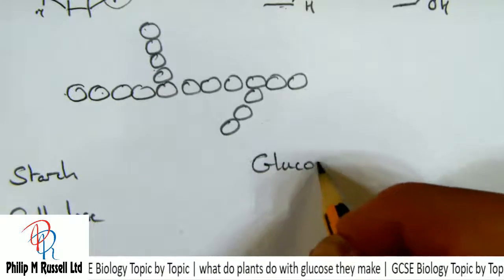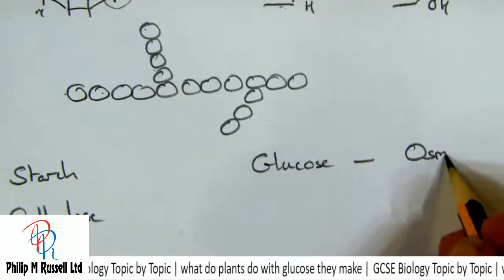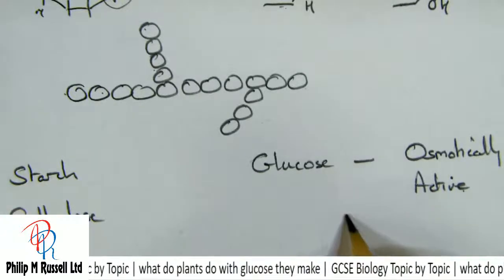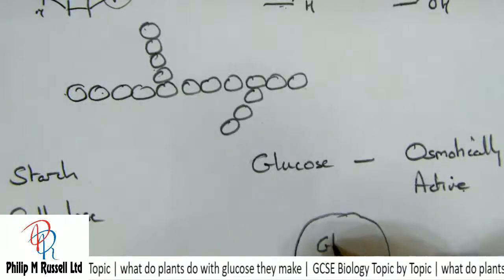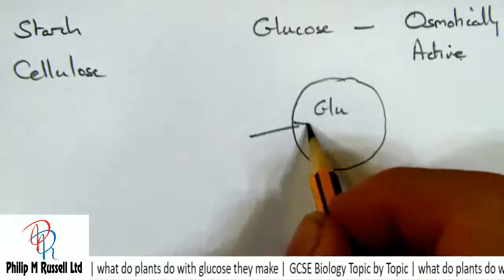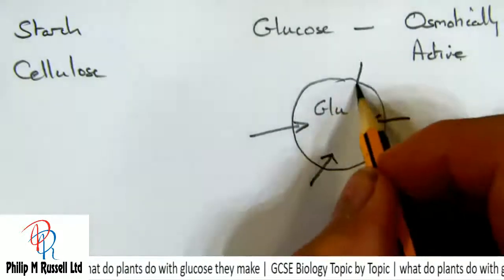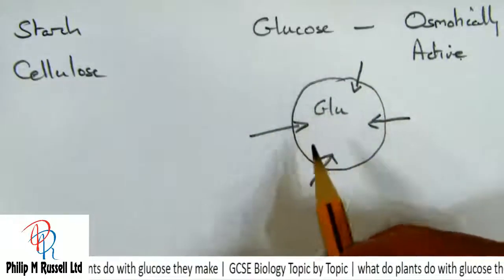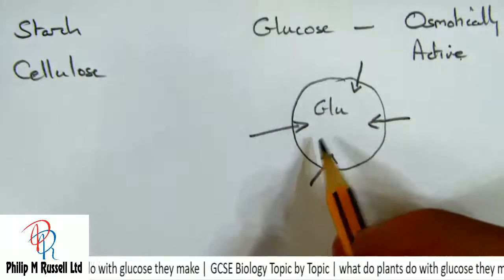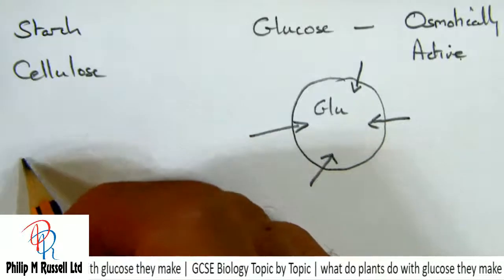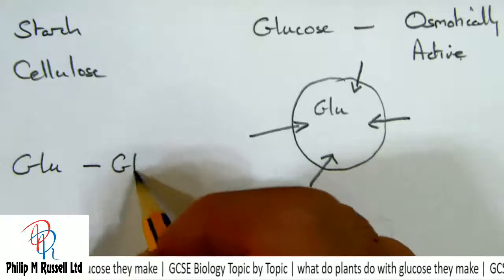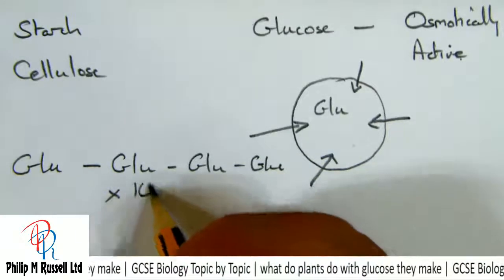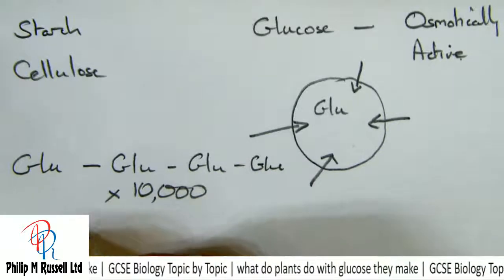Glucose has a problem — it is osmotically active. That means if I've got my cell with a lot of glucose in it, water from the outside will rush in and the cell will swell. In a plant cell that's a good thing, but it can be too much. So what the plant can do is take this glucose and join them together in very long chains, and that makes starch.